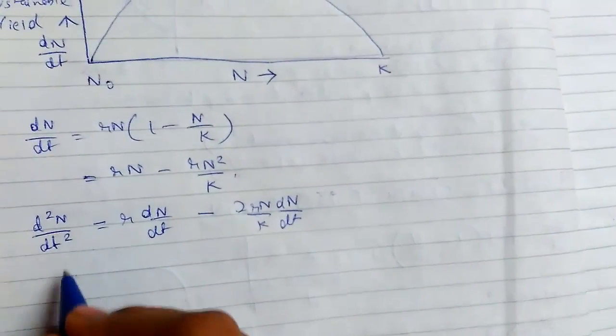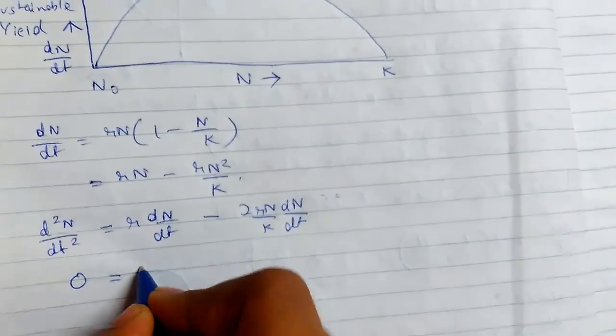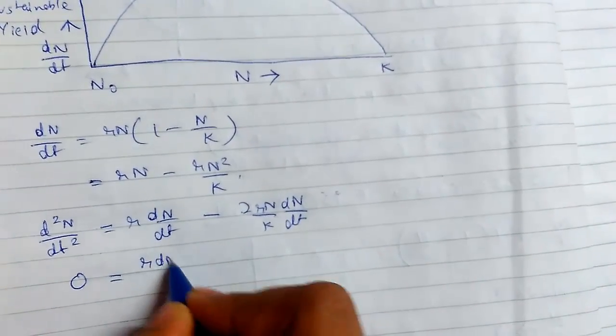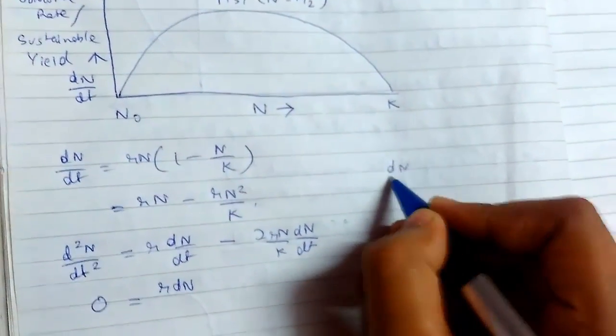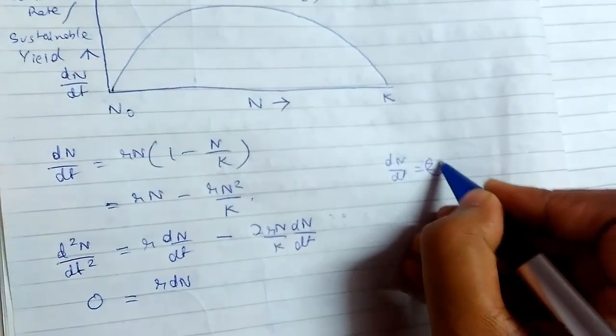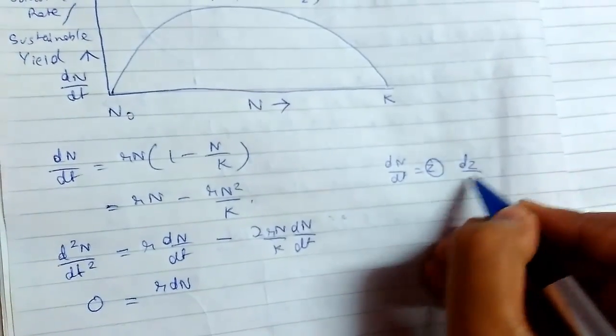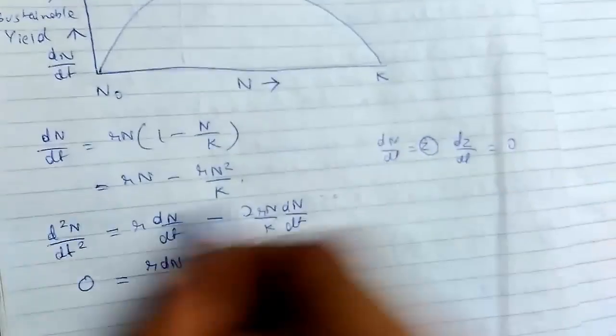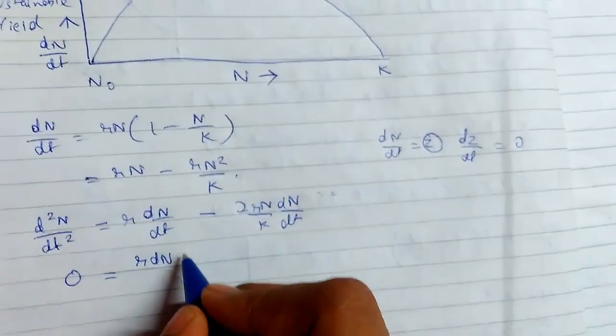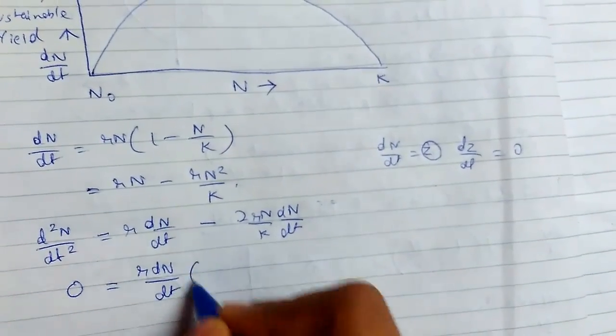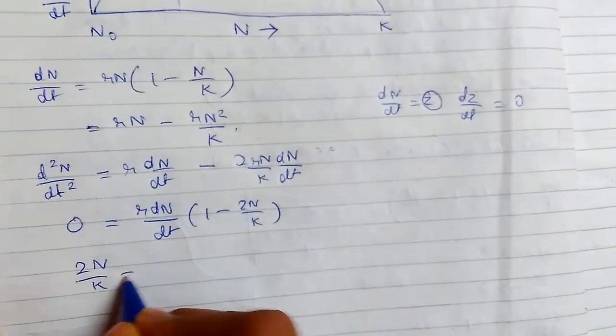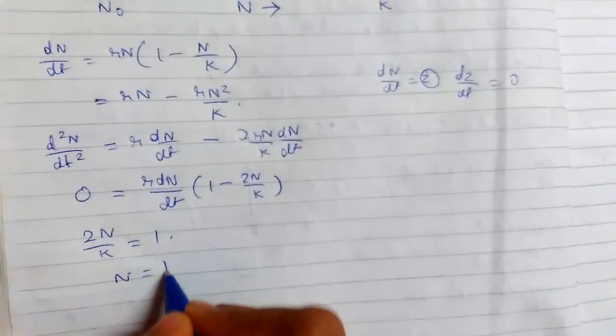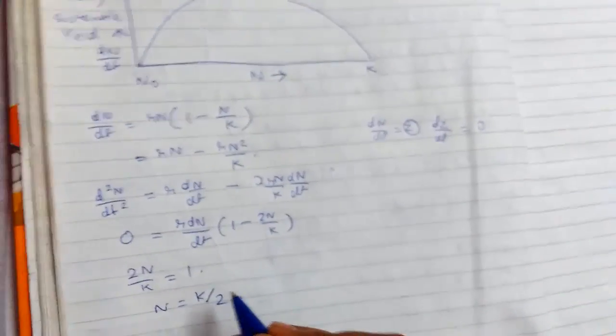So now this will be 0 for maximum. So r(dN/dt), we can consider dN/dt as z, so if we want to find maximum, dz/dt equals 0. Taking this common, this will be 1 - 2N/K. So 2N/K equals 1, so N equals K/2. So we derive the condition for MSY: N equals K/2.